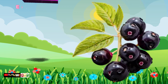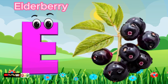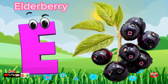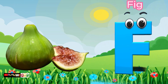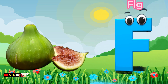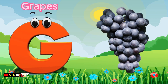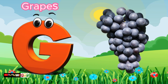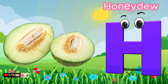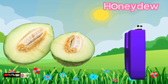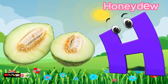E is for Elderberry. E-E-Elderberry. F is for Fig. F-F-Fig. G is for Grapes. G-G-Grapes. H is for Honeydew. H-H-Honeydew.